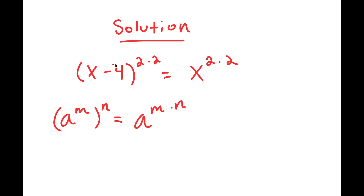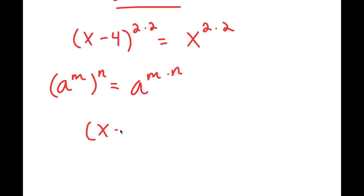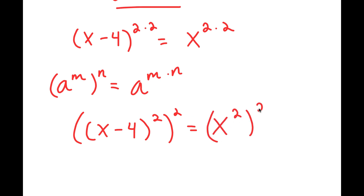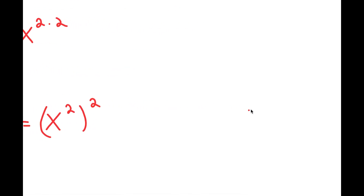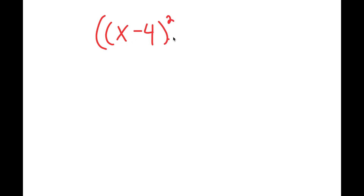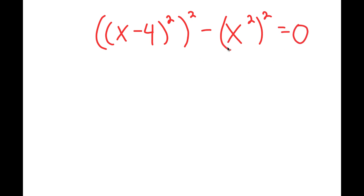Using this property, I can rewrite x minus 4 to the power of 2 times 2 as x minus 4 to the power of 2 to the power of 2, and I can rewrite x to the power of 2 times 2 as x to the power of 2 to the power of 2. From here, this becomes x minus 4 squared, all squared, minus x squared, all squared, is equal to 0, because I subtracted x squared squared from both sides.